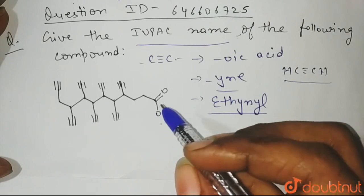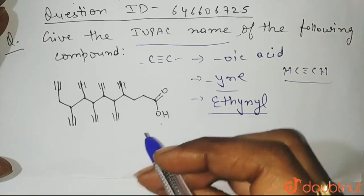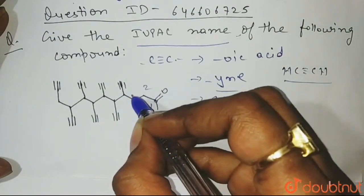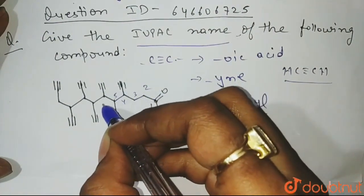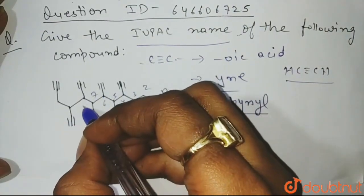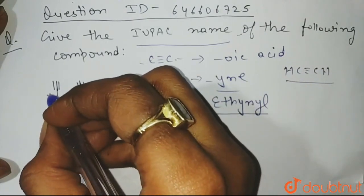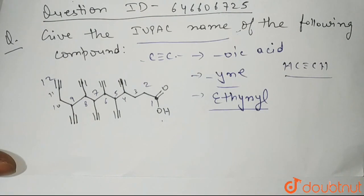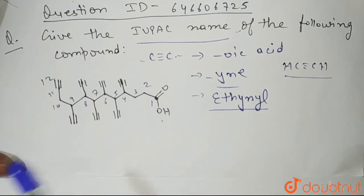Okay, so now let's number this compound. Of course, according to the IUPAC nomenclature, the numbering will start from this carbonyl carbon. So it is 1, 2, 3, 4, 5, 6, 7, 8, 9, 10, 11, and 12. So 12 carbons are there in the main parent chain here.